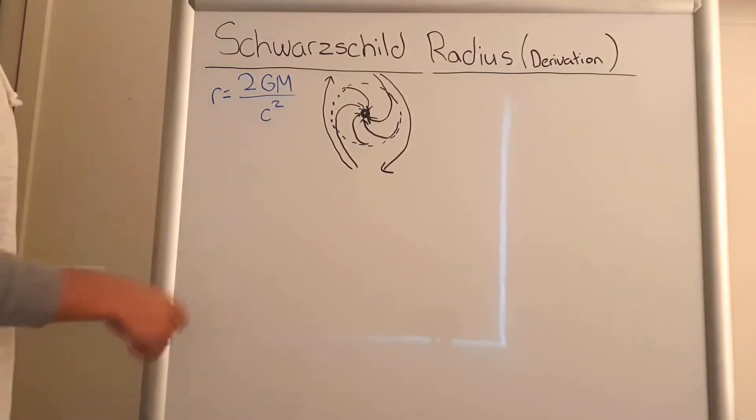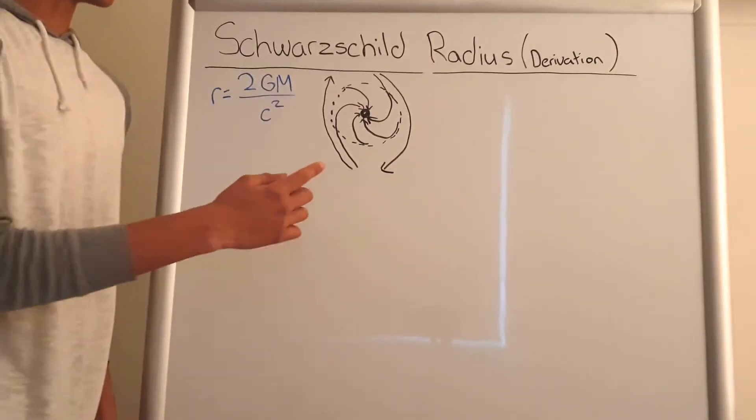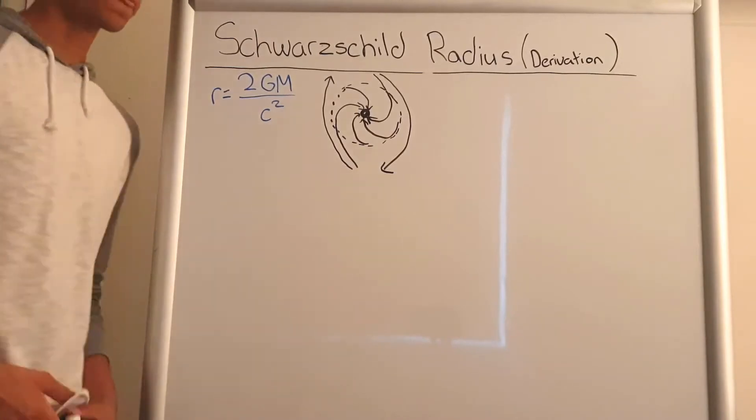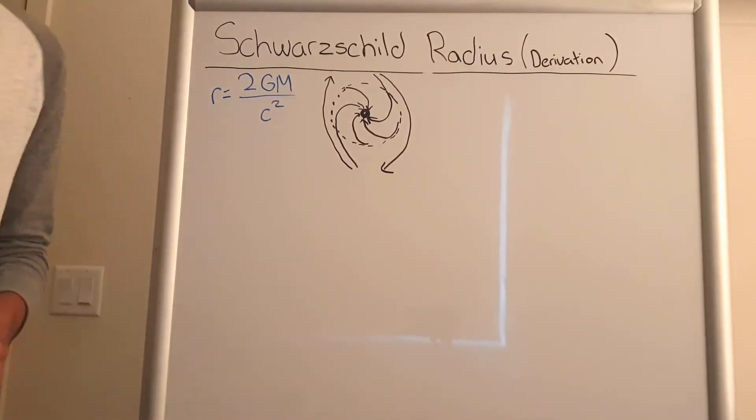So let's look at the derivation of this. In order for light to escape the singularity, the kinetic energy of the light has to be greater than or equal to the potential energy of the gravity from the singularity.